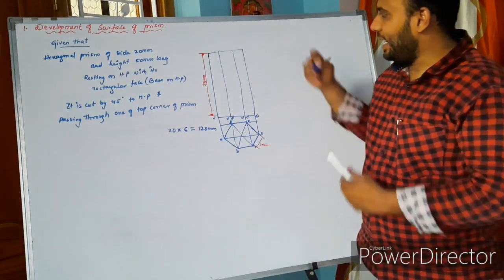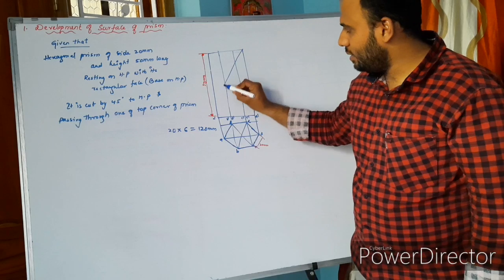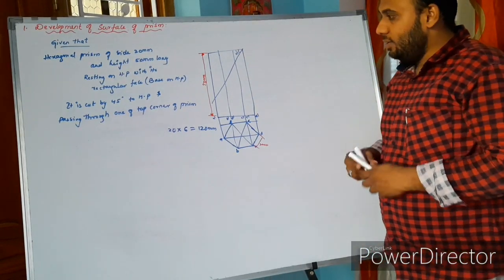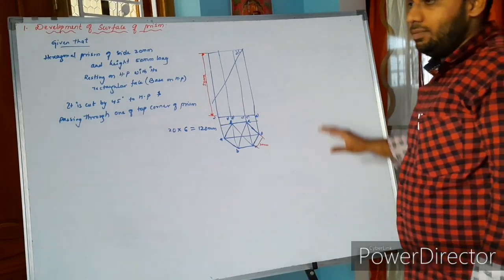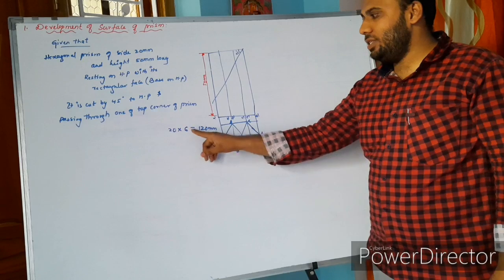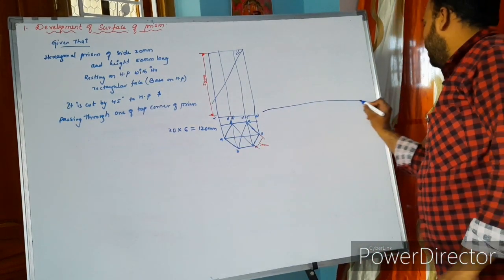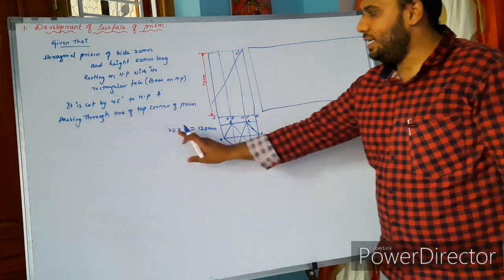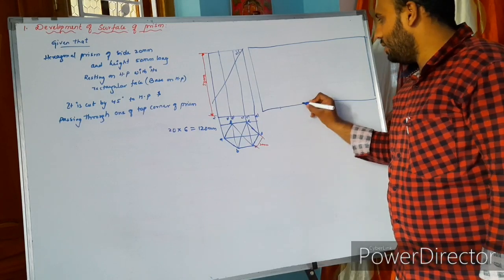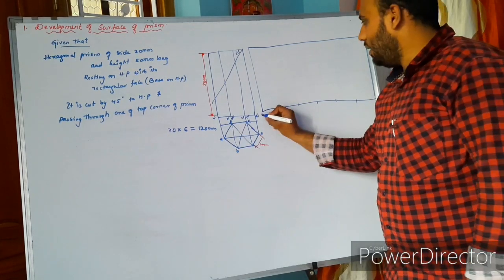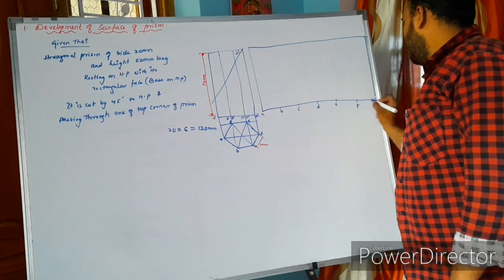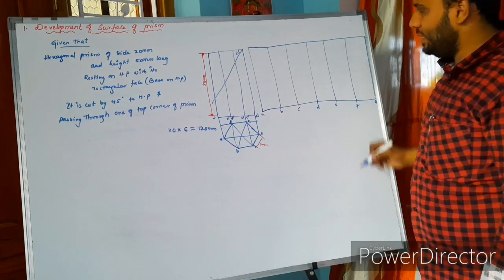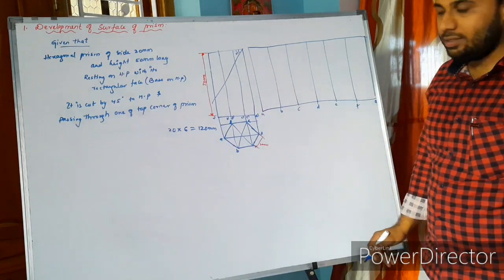The second part: it is cut by 45 degrees to HP and passing through one of the top corners, either from here or here. Keep your protractor here and give an angle of 45 degrees. Before that, you have to draw development of surface. The hexagon consists of six sides, so 20 times 6 equals 120mm.